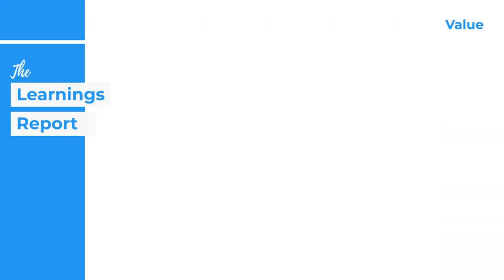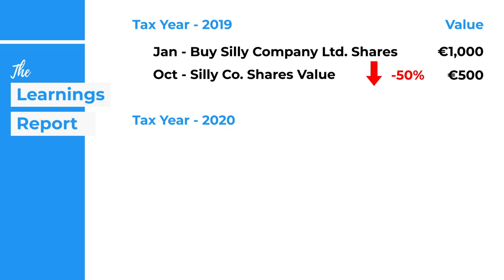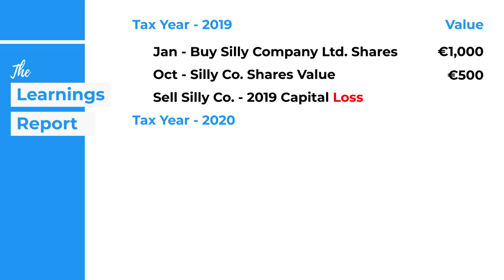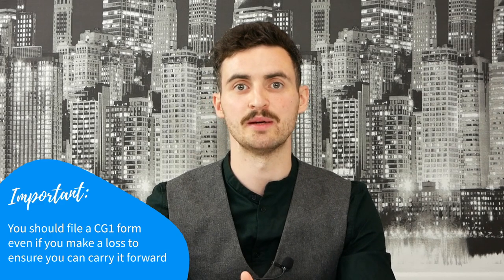Before diving into the step-by-step process, let's use an example with two tax years: 2019 and 2020. In 2019, say we invested €1,000 in Silly Company Limited. By October the investment decreased by 50%, so we sold at a loss of €500. We made no other sales, leaving a net loss of €500 for 2019. It's really important to remember that in Ireland you can carry forward losses, so you need to file a return even if you don't make money, otherwise you won't be able to write those losses off against future gains.